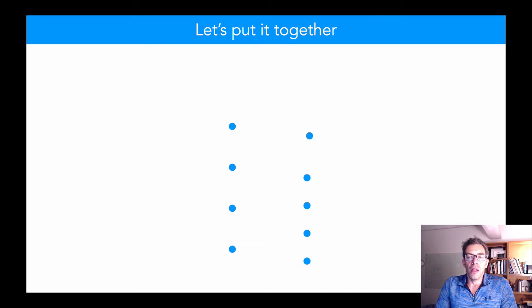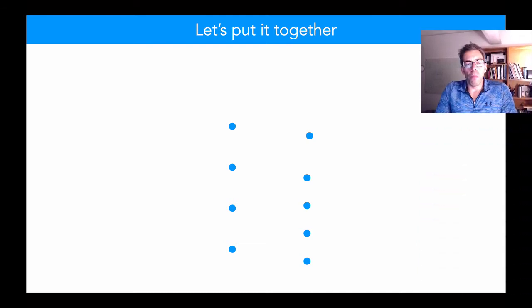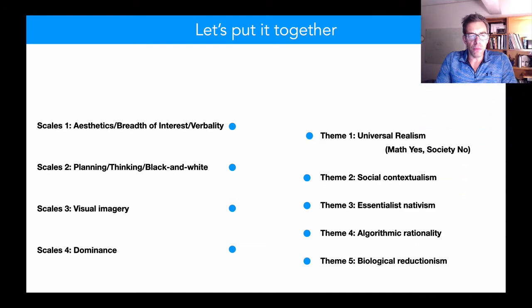Now what we can then do is put it together through some factor analysis so we can reduce the 16 themes into five factors. I've glossed the labels right there and the various scales, tolerance for ambiguity and so on into these four factors. And I'll just go through a few of the associations real quick.